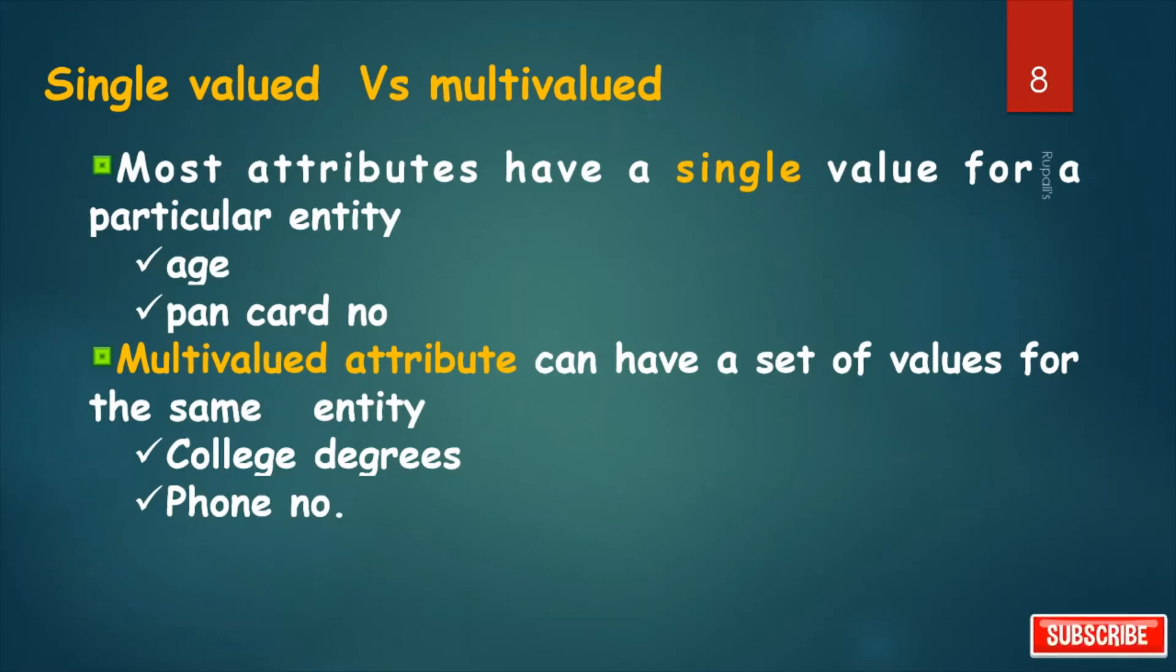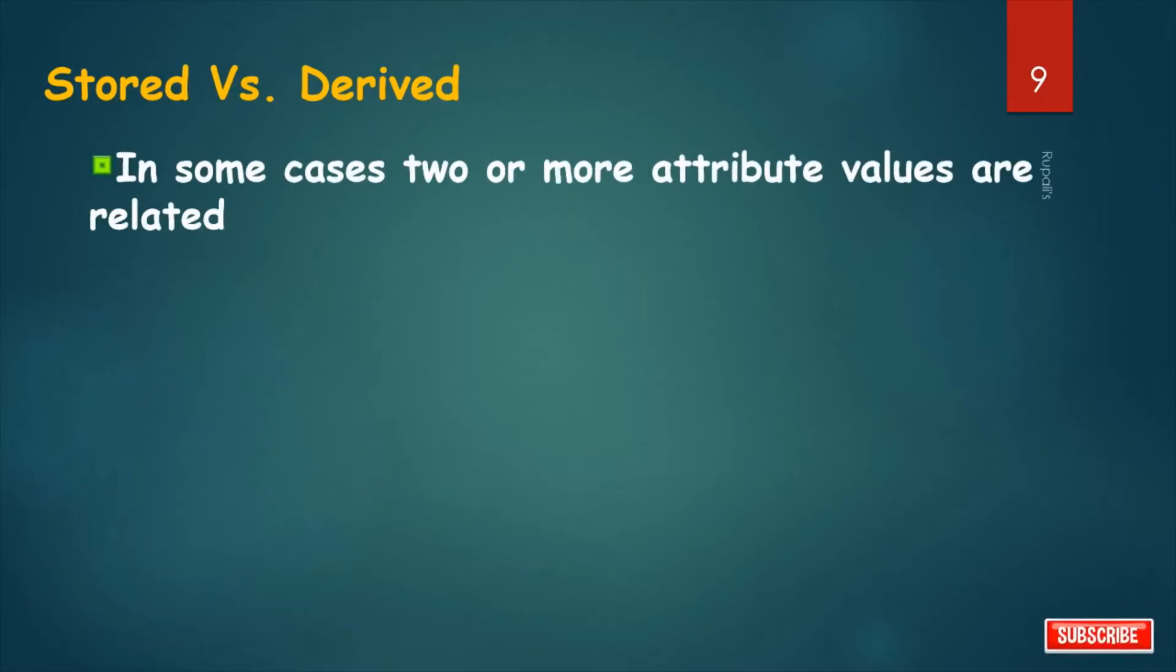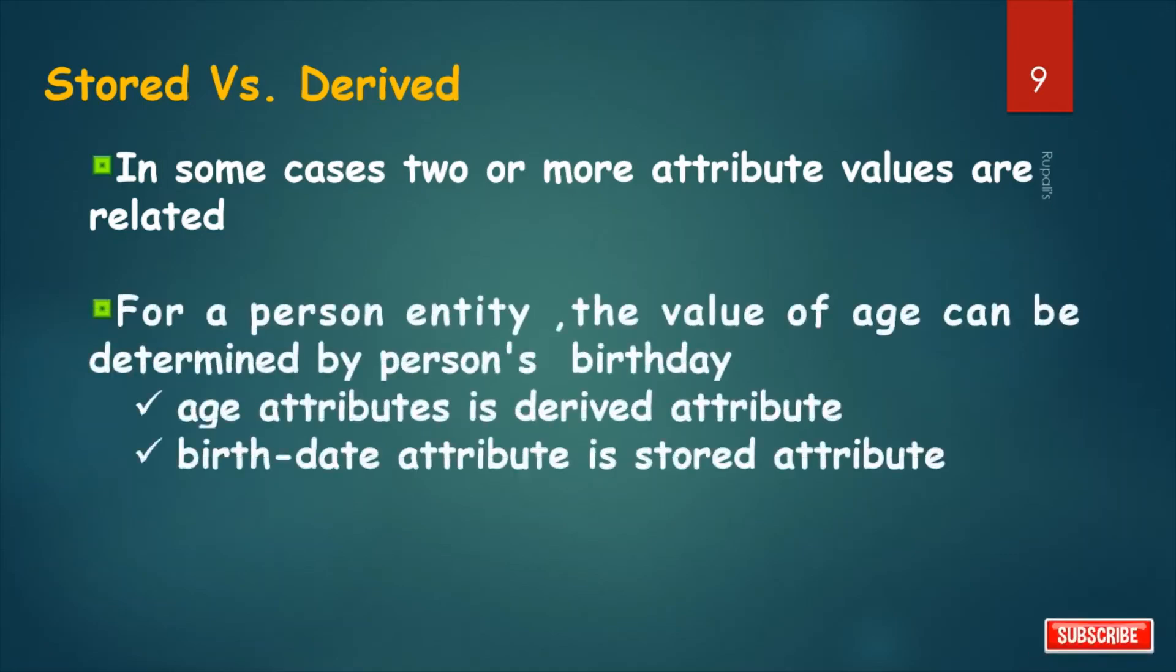Stored versus derived attribute. In some cases, two or more attribute values are related. A derived attribute is one whose value is dynamic and derived from another attribute. It is represented by dashed oval in an ER diagram. For a person entity, the value of age can be determined by person's birth date. So age attribute is derived attribute and birth date attribute is stored attribute.